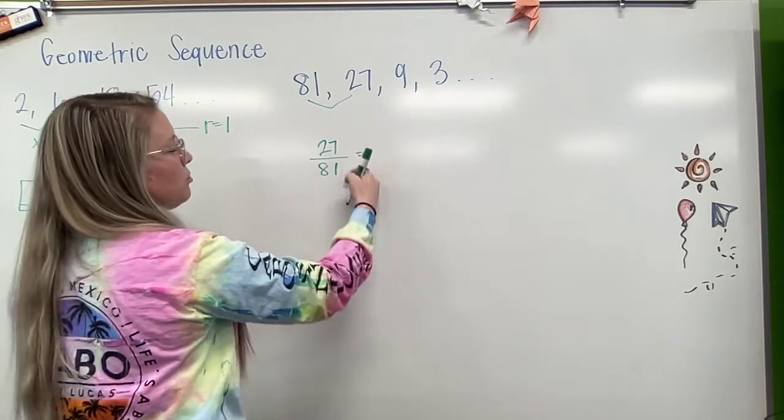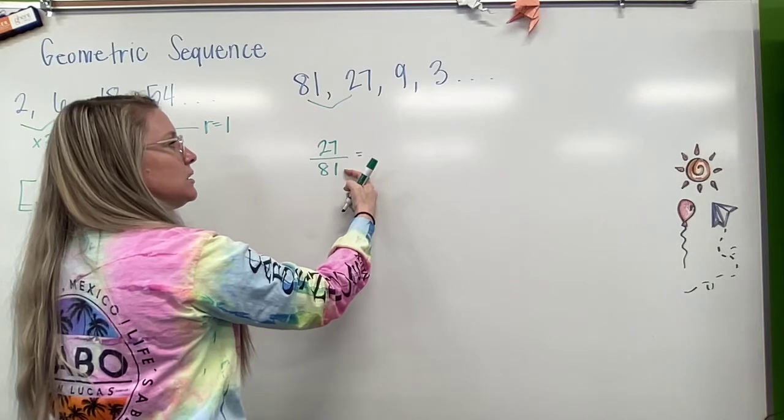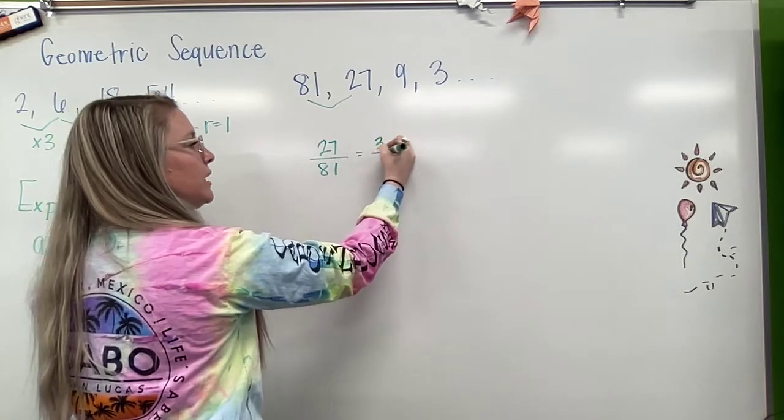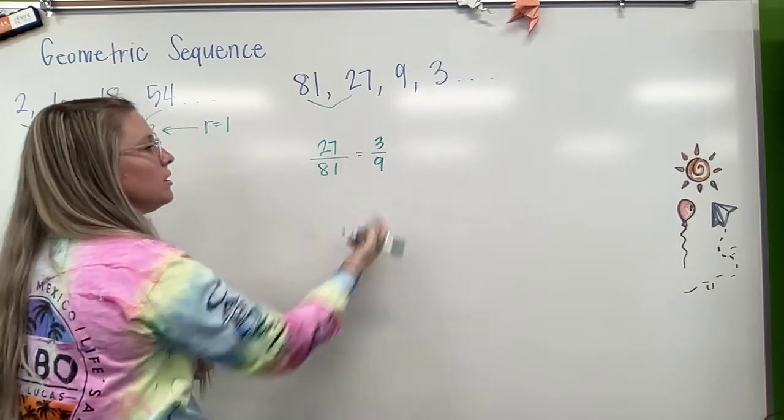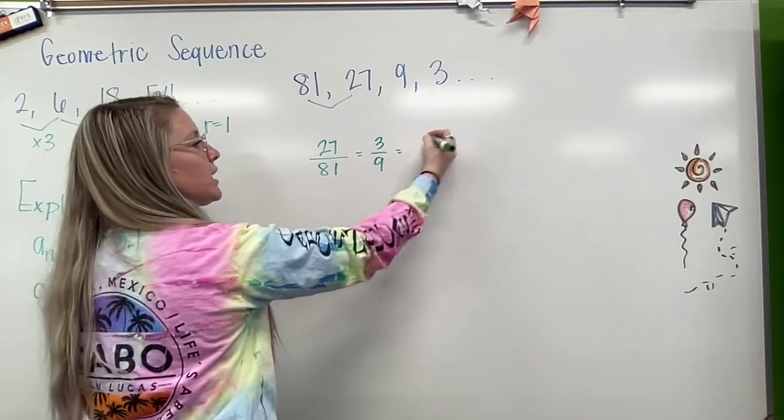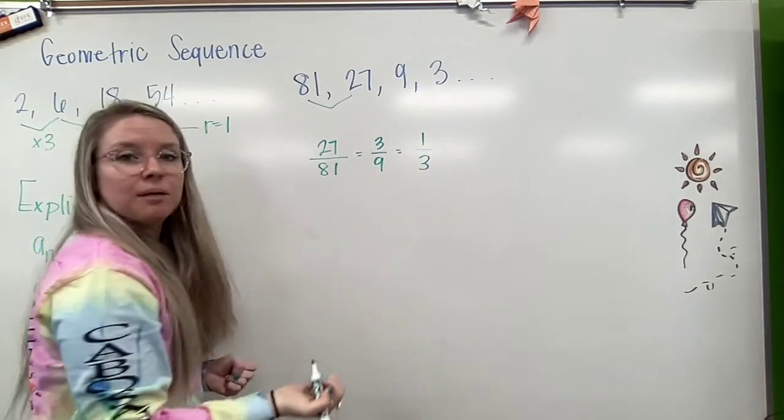These are both divisible by 9, so that's going to become 3 over 9. That's helpful. And then these are both divisible by 3, so that becomes 1 third.